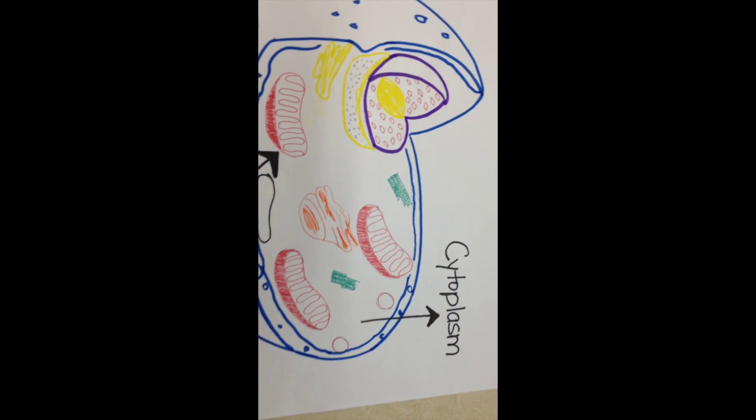Glycolysis occurs in the cytoplasm. During glycolysis, one glucose is being used. Two molecules of ATP are produced for one glucose. Glycolysis is anaerobic, it does not use oxygen.